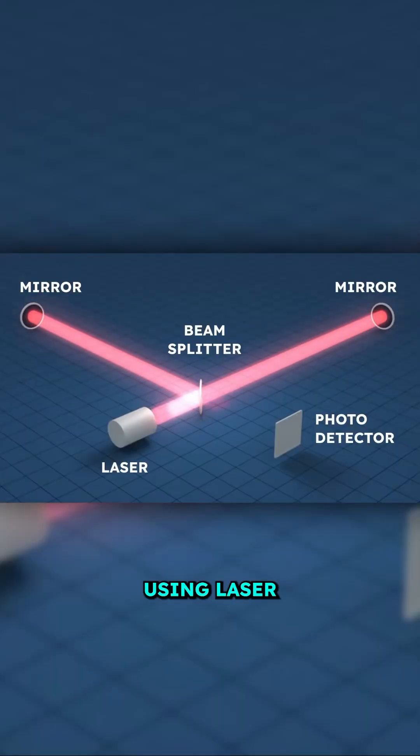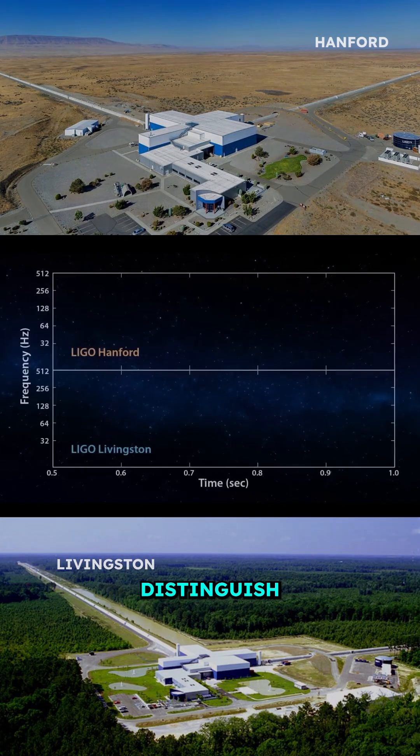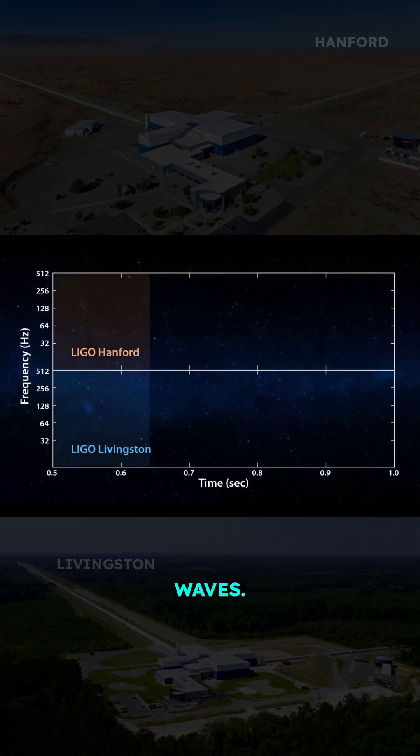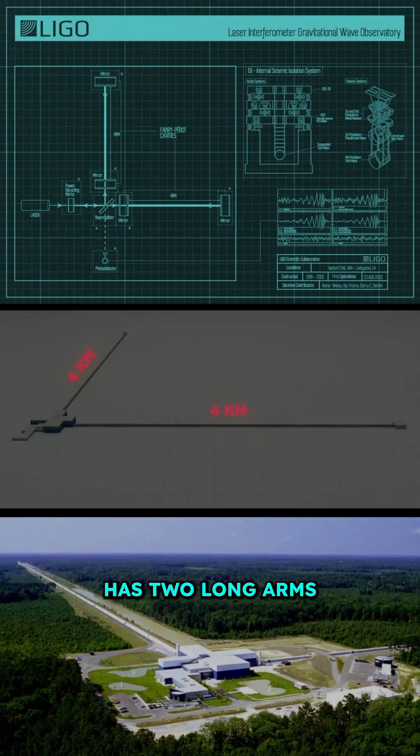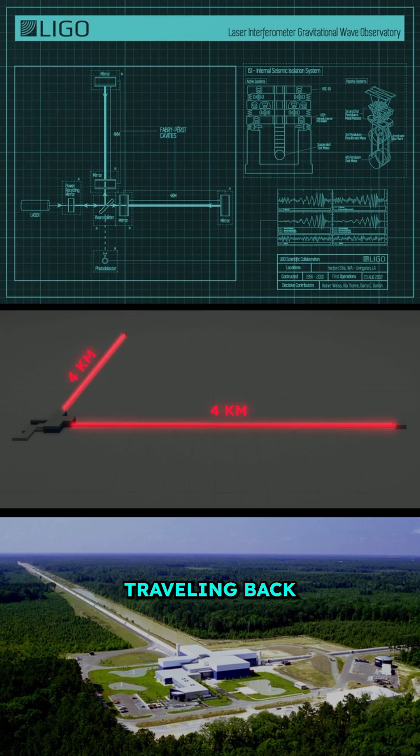LIGO operates using laser interferometry, where signals are compared at two different observatories, and you can distinguish between local noise and gravitational waves. Each facility has two long arms, about four kilometers each, arranged in an L-shape with laser beams traveling back and forth.